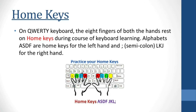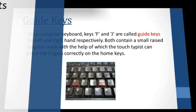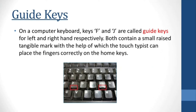On the QWERTY keyboard, the eight fingers of both hands rest on home keys during keyboard learning. The alphabets A, S, D, F are home keys for the left hand, and semicolon, L, K, J for the right hand — so these are called home keys. Next are guide keys. Keys F and J are called guide keys for the left and right hand respectively. Both contain small raised tangible marks with the help of which the touch typist can place the fingers correctly on the home keys.